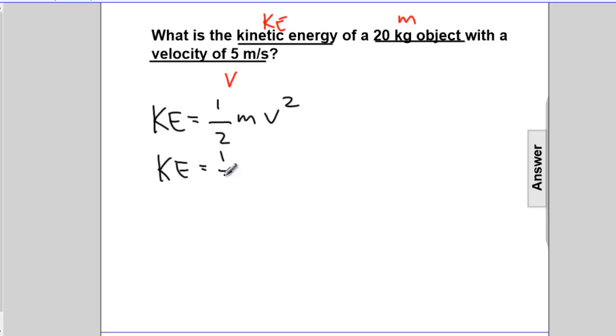Substituting the numbers, we have one-half times the mass, which is 20 kg, times the square of the velocity. That will be 5 meters per second, quantity squared.